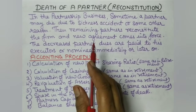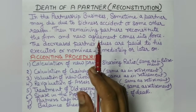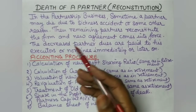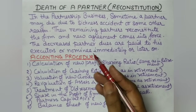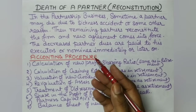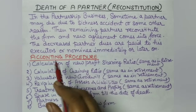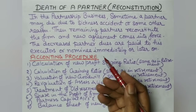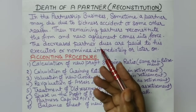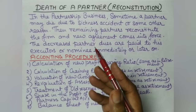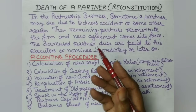A partner's death can happen due to any reason — accident, illness, or any other cause. When a partner dies, the remaining partners reconstitute the firm through a new agreement, deciding how profits will be divided and what the new terms and conditions will be. The deceased partner's dues are then paid to his executor or nominee.